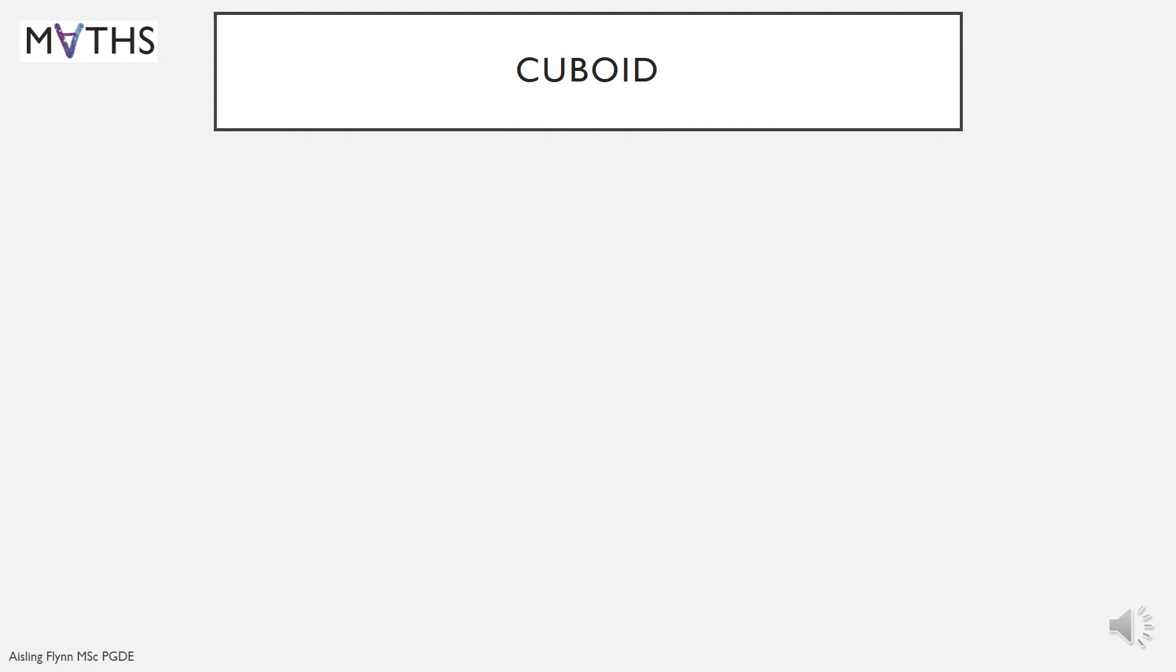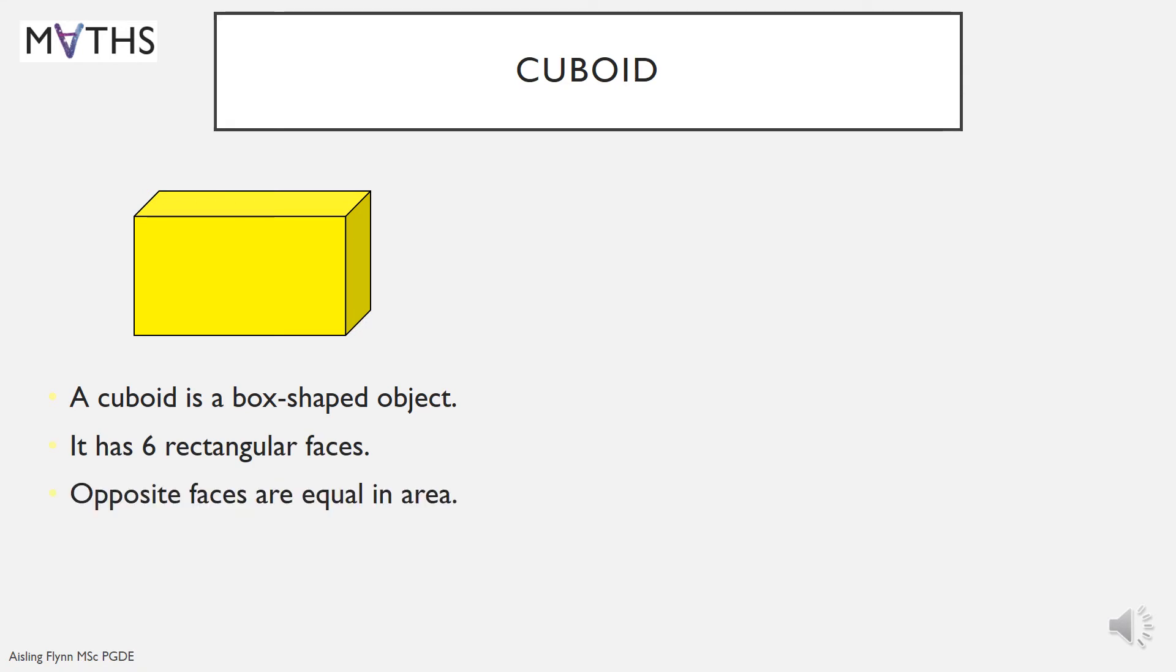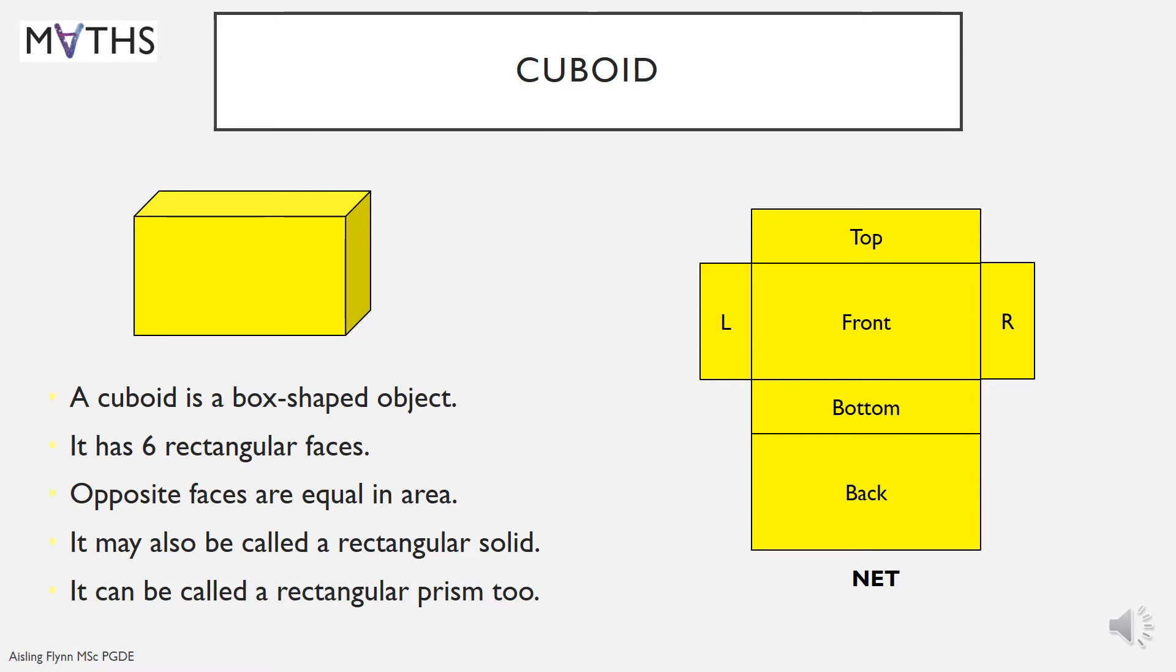Cuboid. This is a cuboid. A cuboid is a box shaped object. It has six rectangular faces. Opposite faces are equal in area. It may also be called a rectangular solid or a rectangular prism as well. Here's a net for the shape on the left.